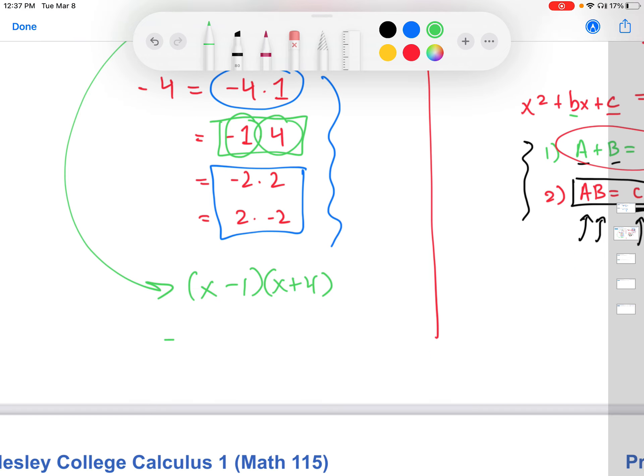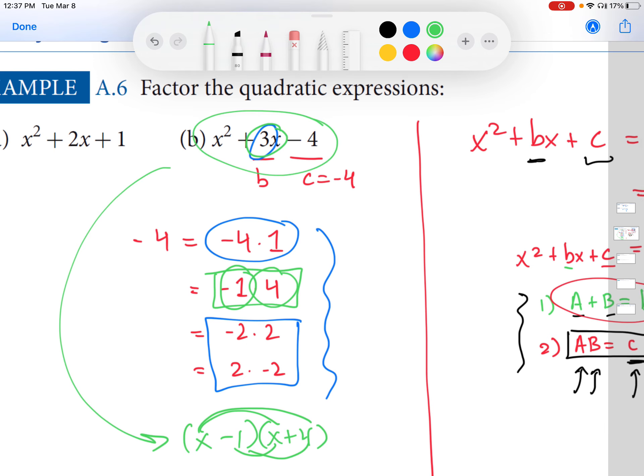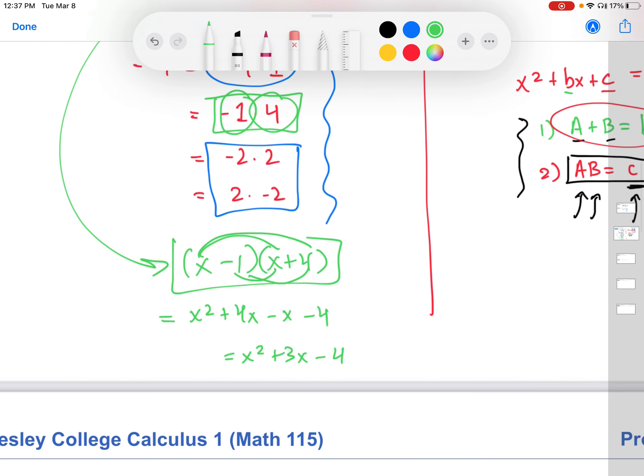And then to double check this again, we would multiply x squared plus 4x minus x and then minus four. That gives us x squared plus 3x minus four. And that's what we started off with. So those are our factors over here.